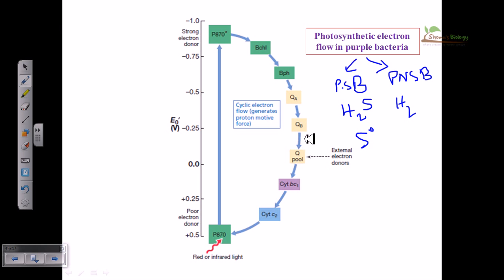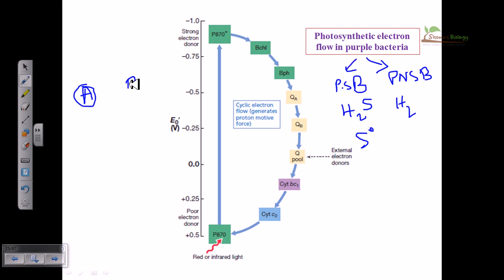Before understanding the flow of electrons through the different electron carriers, we must know some very basic and fundamental concepts — electronegativity and reduction potential. What do we mean by reduction potential? If we have molecule A and molecule B, A can reduce B, so we say that A has a reduction potential for reducing someone else. If you have a reduction potential, that means you can reduce others.